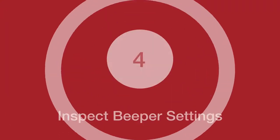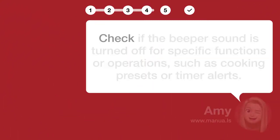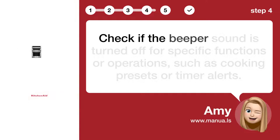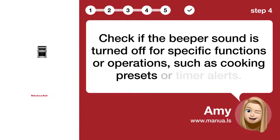Step 4: Inspect beeper settings. Check if the beeper sound is turned off for specific functions or operations, such as cooking presets or timer alerts.